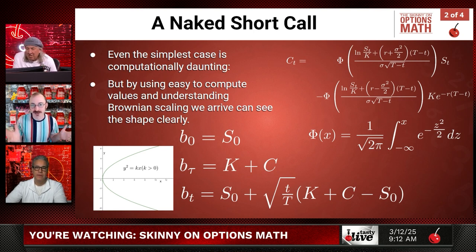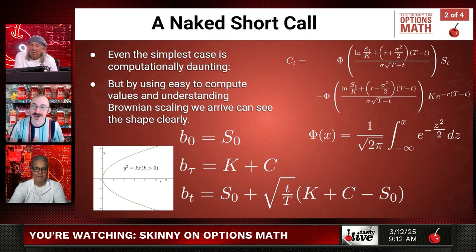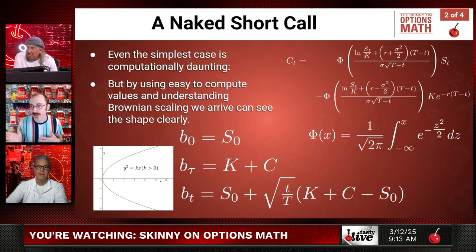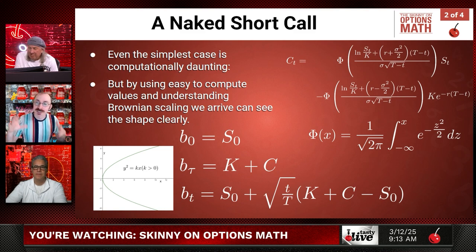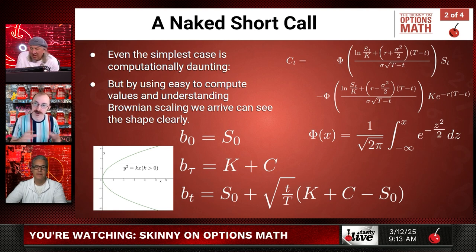The simplest case would be just a single naked short call. On the right, in its full horrific glory, is the Black-Scholes formula for the fair value of a call. It has Φ — the normal cumulative density function — your spot price, your risk-free rate, your volatility, and capital T minus little t (the same as τ, the time until expiration). It's a big mess.